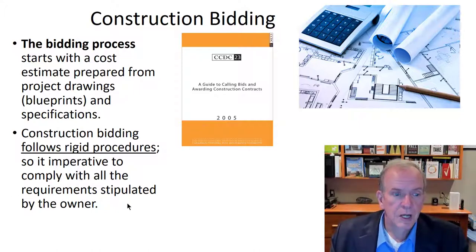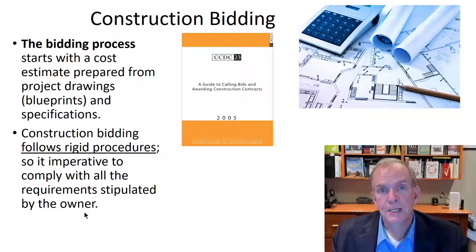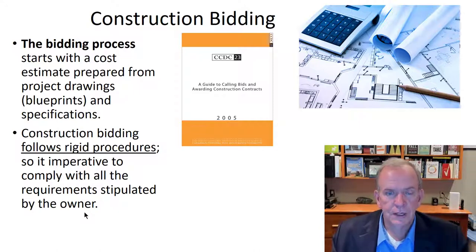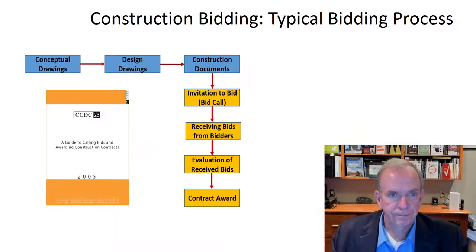The process follows rigid procedures and you have to comply with the requirements stipulated by the owner. If the owner says something in the bid documents, you better comply — because that's a reason they don't have to accept your bid. For example, if you're supposed to put in a clearance certificate from WSIB and you forget, that's enough for them to not accept the bid. These things occur all the time.